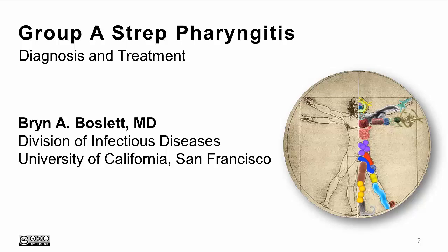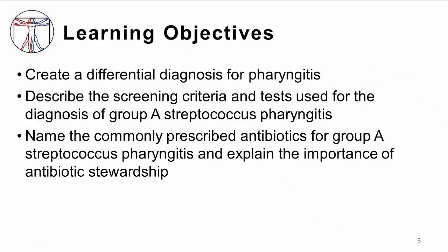Hi, my name is Brynn Bosslett and I am an infectious disease doctor at the University of California, San Francisco. Today I'm going to be talking about the diagnosis and treatment of group A strep pharyngitis within the group A strep pharyngitis module. The goals for today's session include being able to create a differential diagnosis for pharyngitis, describe the screening criteria and tests used for diagnosis, and name the commonly prescribed antibiotics for group A strep pharyngitis and explain the importance of antibiotic stewardship.